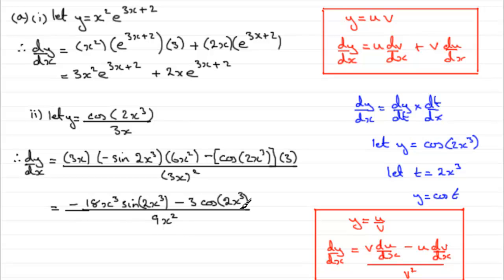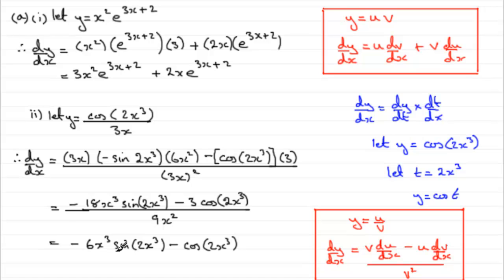There you basically have it. Although you could simplify this a bit further — notice that each of these terms is divisible by 3. If you did carry on to do that, then the top term would be minus 6x cubed sine of 2x cubed, and then minus cos of 2x cubed, all over 3x squared. That's an alternative answer. You could even take a minus out completely, putting brackets round and changing the minus to a plus — but I'll leave that up to you.